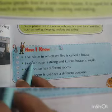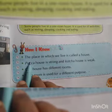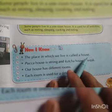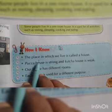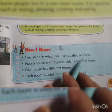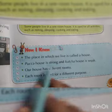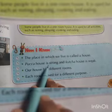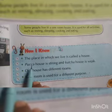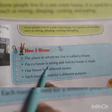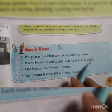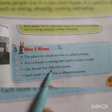Let us revise the main points of this chapter. The place in which we live is called a house — वो हमारा घर कहलाता है। There are two types of houses. Pakka house is strong — पक्का हाउस मजबूत होता है — and kaccha house is weak — कच्चा हाउस वेक होता है।